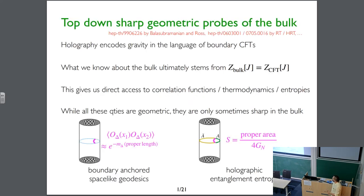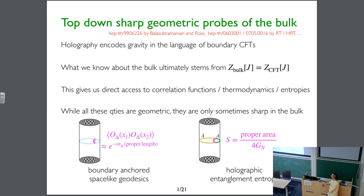Let me start with a broad introduction. What I want to talk about is an idea within what I like to call top-down sharp geometric probes of the bulk. Holography encodes gravity in the language of boundary CFTs, and what we know about the bulk ultimately stems from the holographic dictionary — specifically the zeroth-order entry, which gives us direct access to correlation functions, thermodynamics, and entropies.